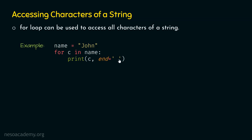We need to provide: end equal to single quotes, and within single quotes, one white space character. This white space character is optional. If we want that after each character a white space character should come, then within these single quotes, we need to provide one white space character. So with this, after each character, one white space character will be added.